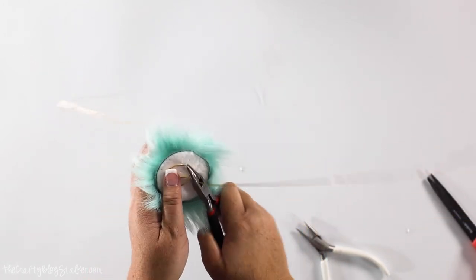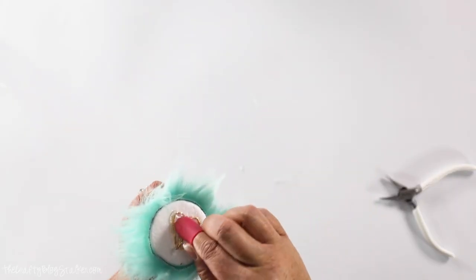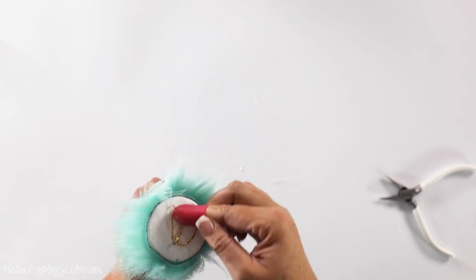I'm going to cut off that excess wire. Then I have this little finger protector for glue, and I'm just going to push that into place.